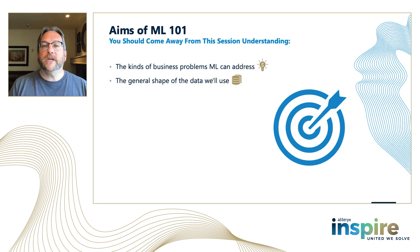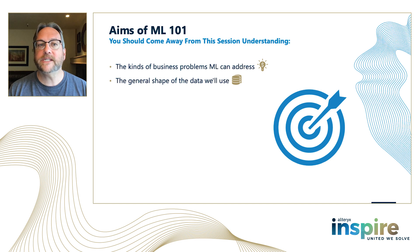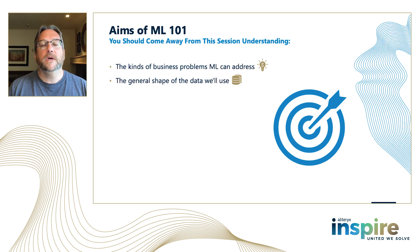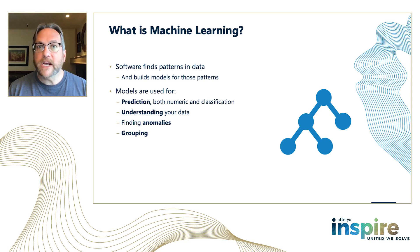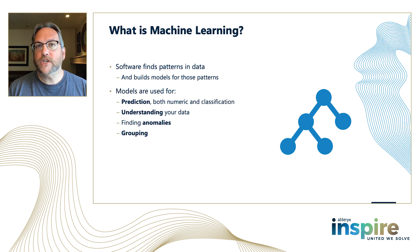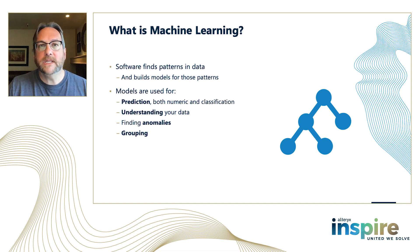The aim of this session, ML101, is to look at the kinds of business problems that machine learning can address and get an understanding of the general shape of the data we're going to use. Machine learning is all about software that finds patterns in data and then either allows you to get some understanding of your data from those patterns, or to build models which allow you to make predictions. Those predictions can either be numeric — predicting something like revenue — or classification predictions. Machine learning of this type is also used for finding anomalies and for grouping, but we're not going to cover those in these sessions.